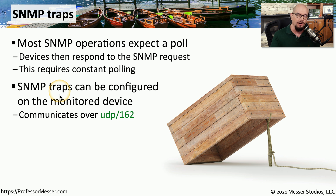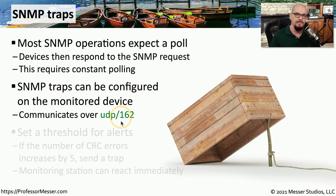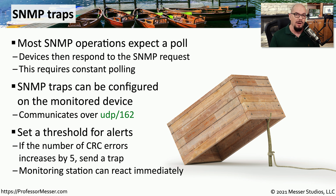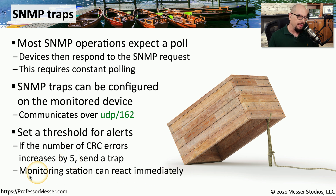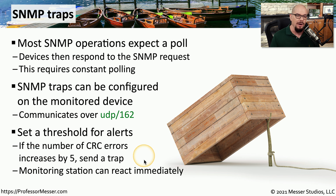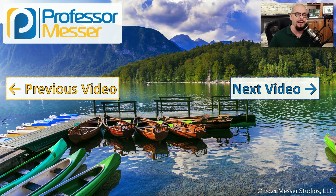We refer to this as an SNMP trap. This SNMP trap is an alarm or an alert that is sent reactively to the management workstation, usually over UDP port 162. This allows us to be informed immediately if any problems are occurring if we've configured it to check for these values. For example, we could tell a device that if the number of cyclic redundancy errors increases by a factor of five, to send a trap back to the management workstation, at which point the monitoring station can send an alarm or alert directly to our phones, show an icon on the screen, make a sound, or perform some automated functions to work around the problems. Usually, you'll find that your management station is using a combination of polling and receiving traps to get the best view of what's happening on your network.